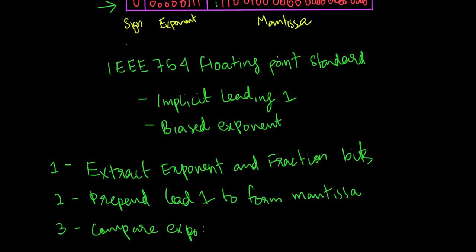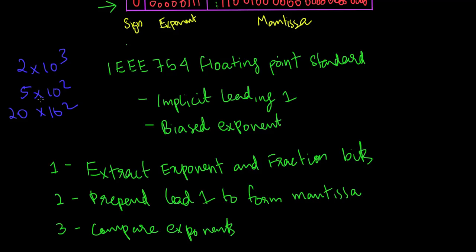The third step is to compare exponents. For example, in decimal: 2 times 10 raised to 3 plus 5 times 10 raised to 2. We align exponents by converting to 20 times 10 raised to 2, then add to get 25 times 10 raised to 2, which normalizes to 2.5 times 10 raised to 3.